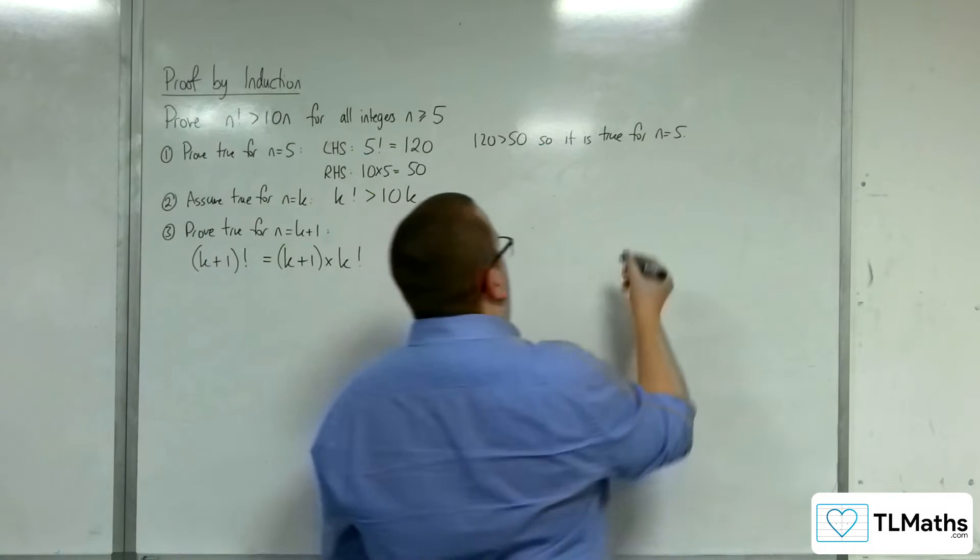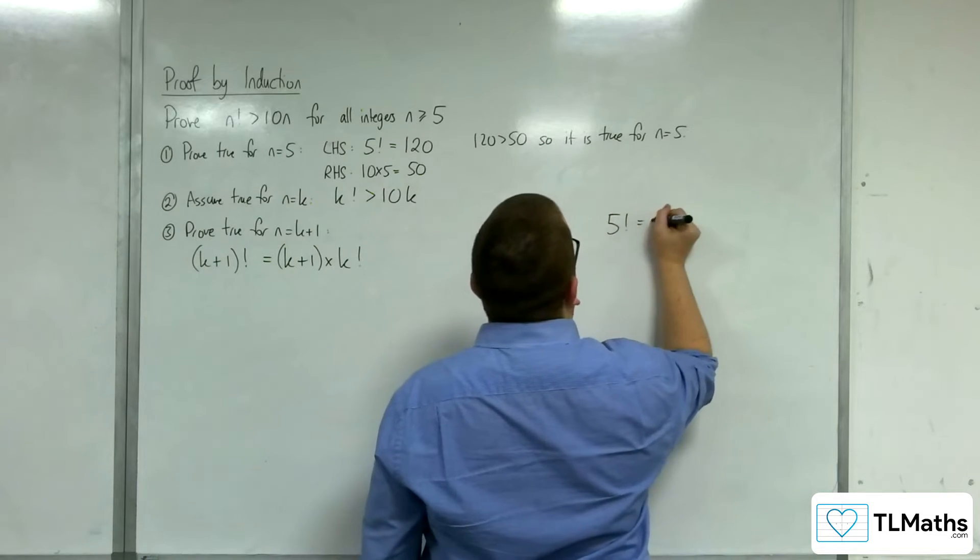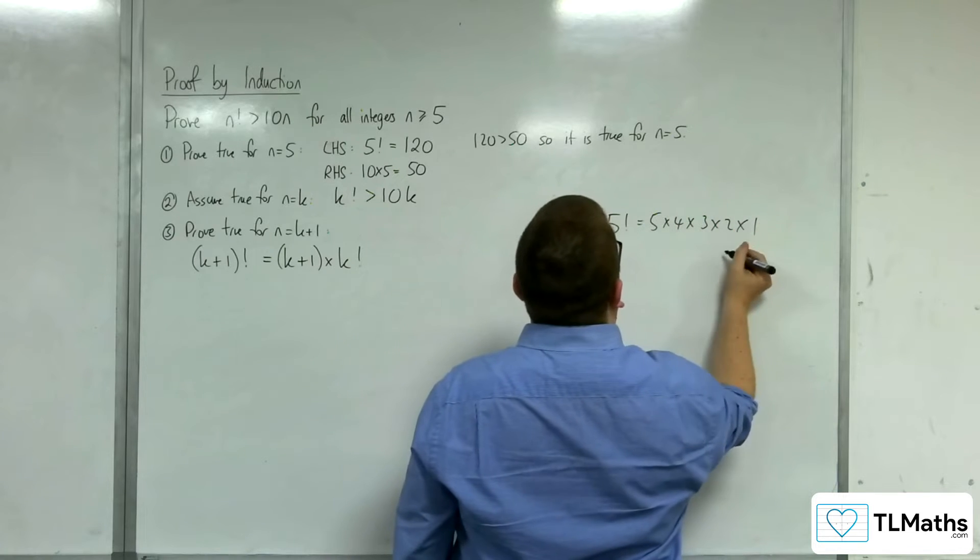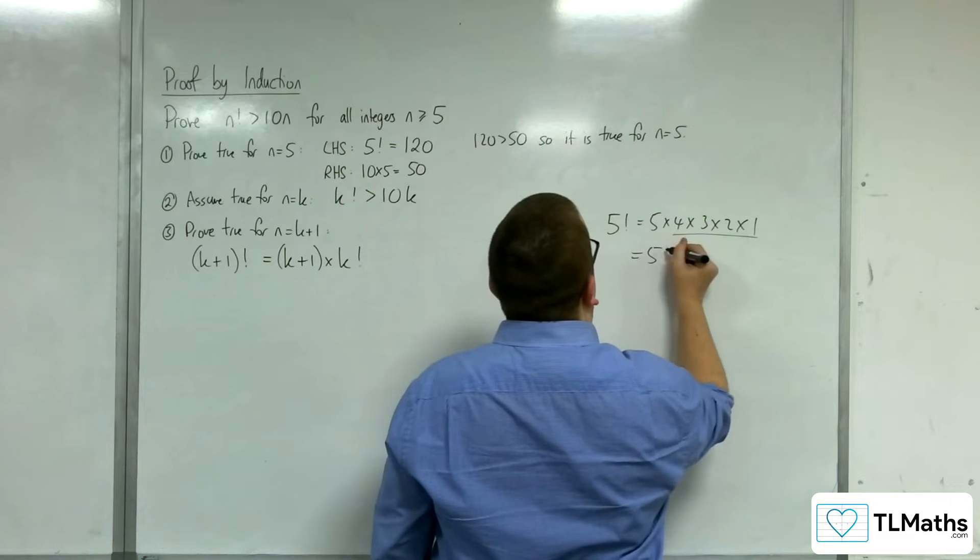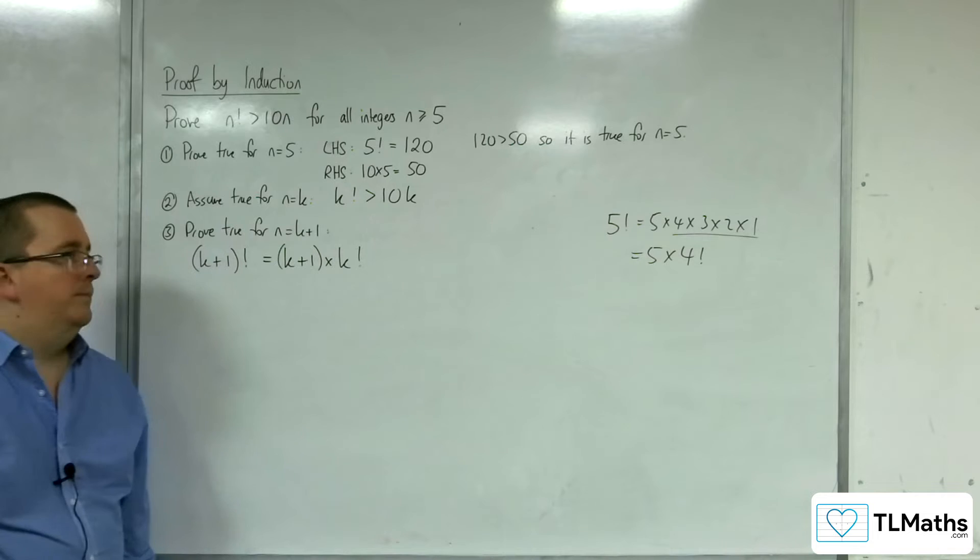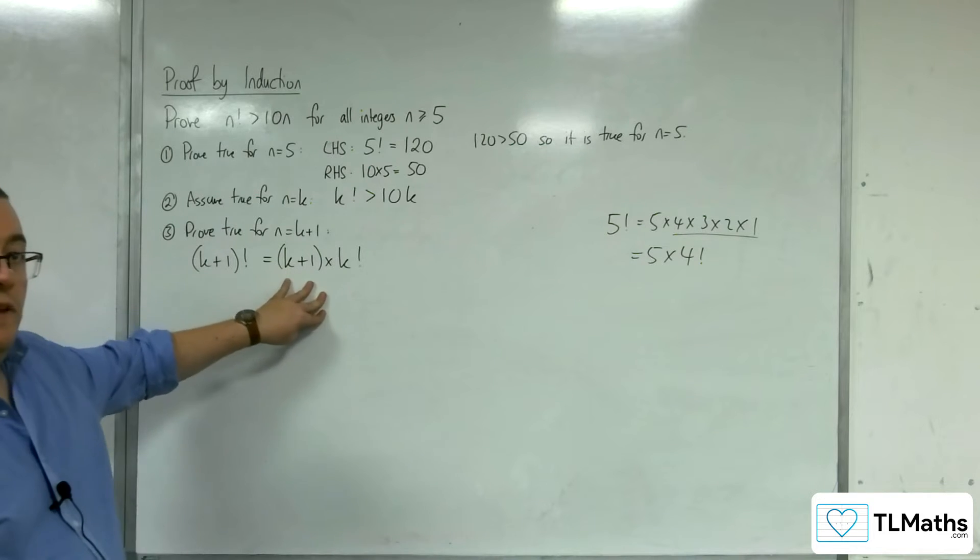Now, the reason why that is, if I had 5 factorial, that's 5 times 4 times 3 times 2 times 1. But, that is just 4 factorial. So, you could write 5 factorial as 5 lots of 4 factorial in much the same way as I've done there.